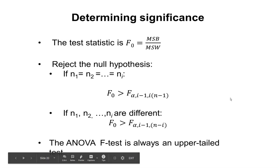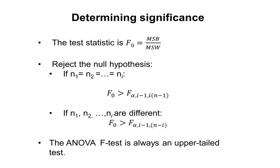To determine significance, we look at the test statistic — the mean square between groups divided by the mean square within groups, which is the value in that last cell in the ANOVA table. We can reject the null hypothesis if our test statistic is greater than the critical value from the F table. If we're working in R, we can look at the p-value and compare it to our level of significance.